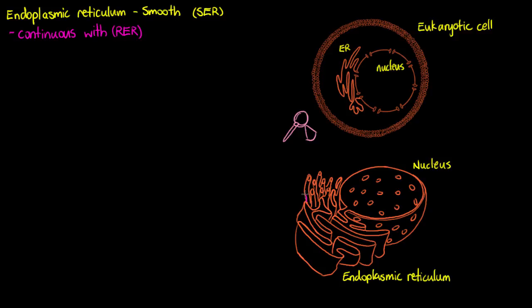The first thing we're going to want to note is that it's continuous with our rough endoplasmic reticulum. So it's going to extend from our rough endoplasmic reticulum and I'm just outlining it here and I'll do a better view as well so we can get a clearer picture of that extension.